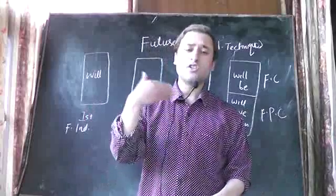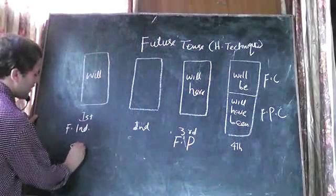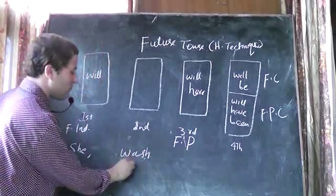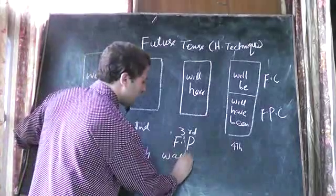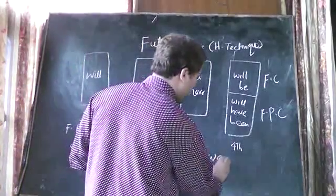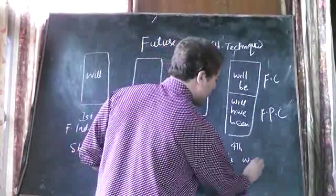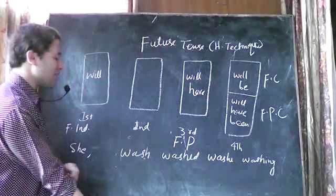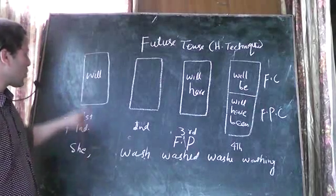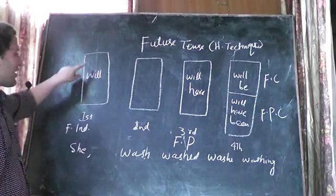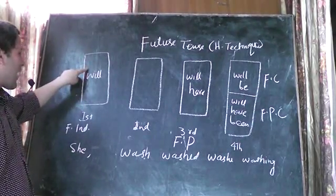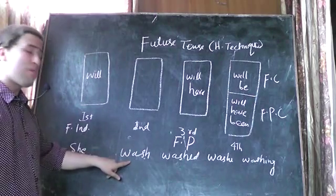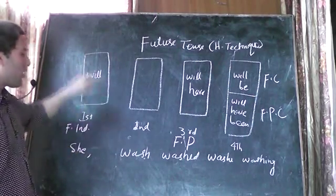Let's take the subject as 'she' and the verb 'wash'. The first form is 'wash', second form is 'washed', third form is 'washed', and fourth form is 'washing'. Now let's play the trick: she is the subject, so we start from the subject then reach the box. 'She will' — and which form of verb? The first form, because in our technique the first box uses the first form of the verb. So it becomes: she will wash.